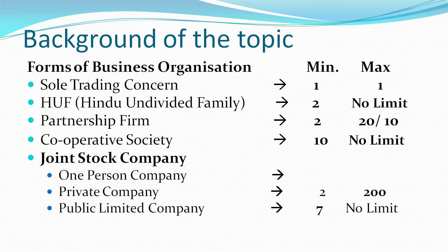The third form is the partnership firm. In a partnership firm, a minimum of two persons are required and a maximum of 20 persons. We will see this in detail. However, if the partnership firm's business is of banking, then the maximum number of members allowed is 10.